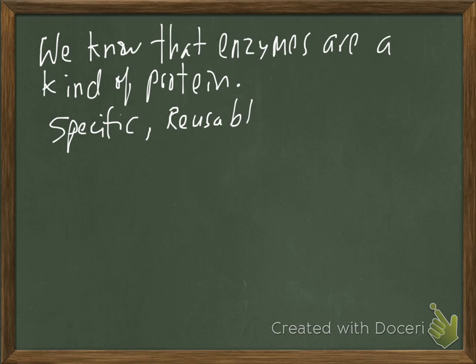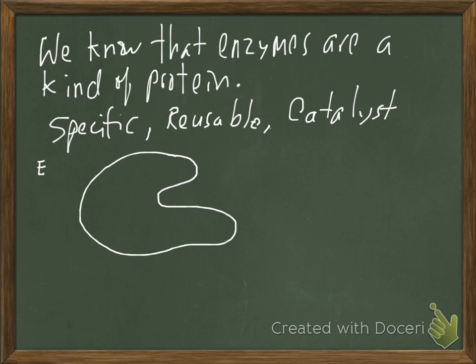Alright, so we know some things about enzymes. They're specific. And that means that each enzyme is only able to work on one kind of molecule. And we're getting a little bit ahead of ourselves there, but we know that they're specific. They only act on one or a few kinds of molecules. And we'll talk about what they do to those molecules in a little bit.